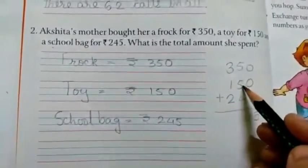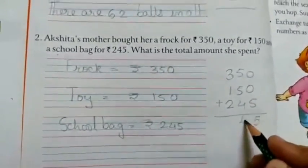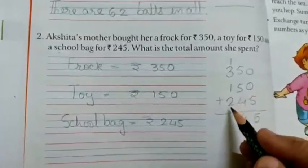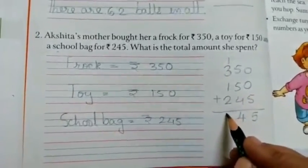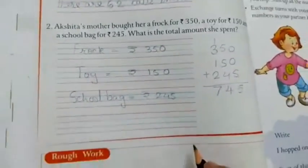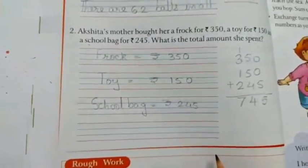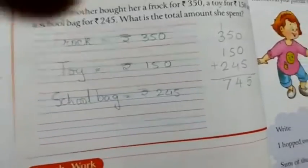First what we have to add? We have to add ones column, then tens, and then hundreds. 0 plus 0 plus 5 is 5. 5 plus 5 is 10, plus 4 is 14. 3 plus 1 is 4, plus 1 is 5, plus 2 is 7.